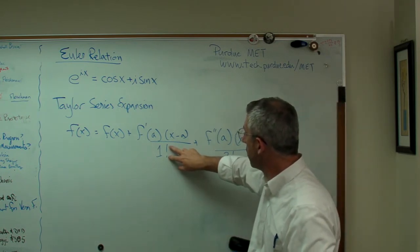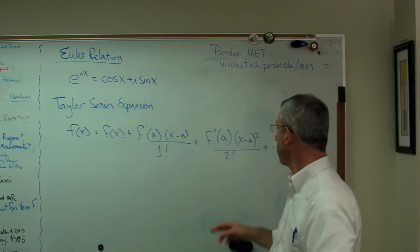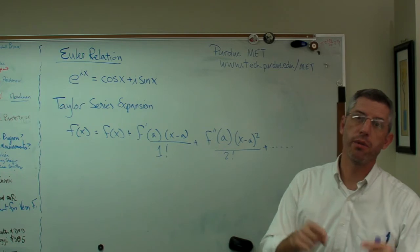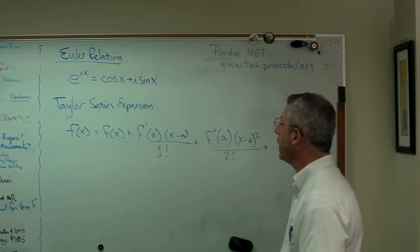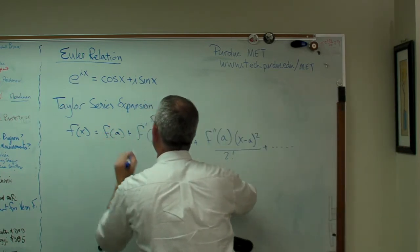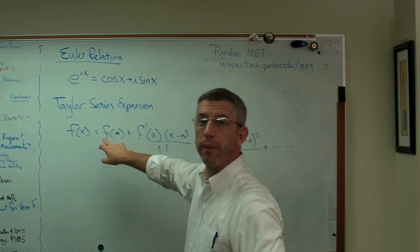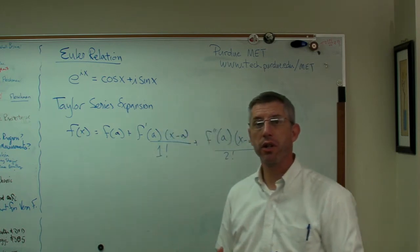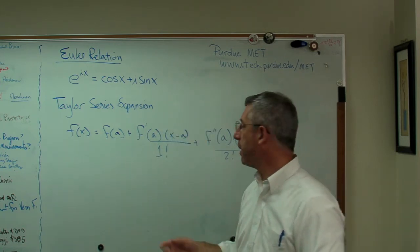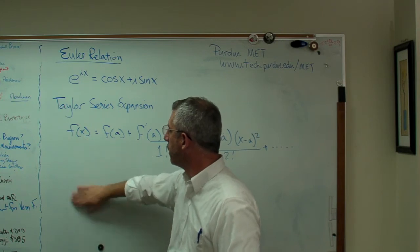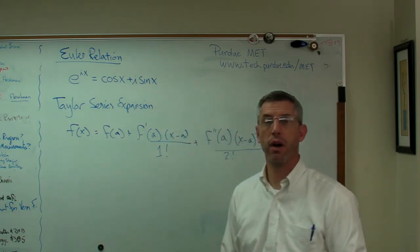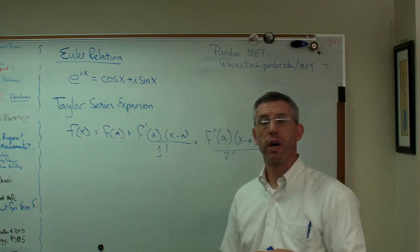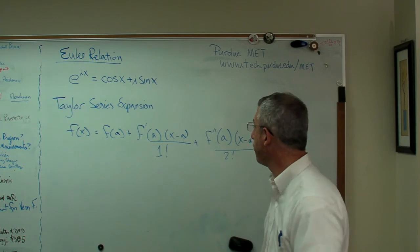This exclamation point right there is a factorial. So 1 factorial is 1. 2 factorial is 2 times 1. 3 factorial is 3 times 2 times 1, and so on. Now that's actually A. A is a number, some number, and what we say is we expand a function about A. What that means is if I'm going to calculate this function for a bunch of values of x, I'll pick A that's near the x I'm going to use so I get a better approximation, becomes more accurate.